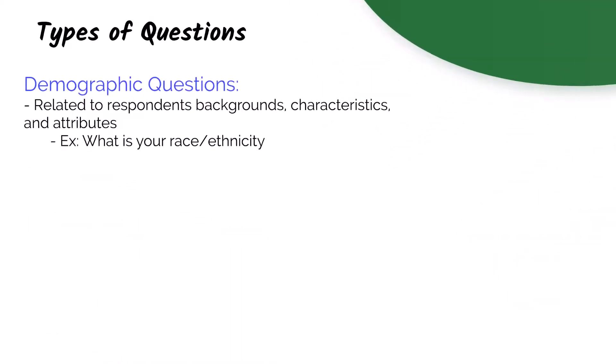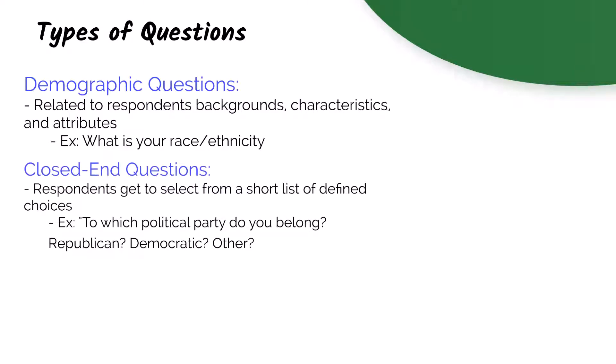Some of the key types of questions you should be aware of are demographic questions, which are related to a respondent's backgrounds, characteristics, and attributes. This might be your race or ethnicity. Closed-end questions is where respondents get to choose from a short list of defined choices. In other words, it's a multiple choice question. For instance, which political party do you belong to? Republican, Democratic, or other?